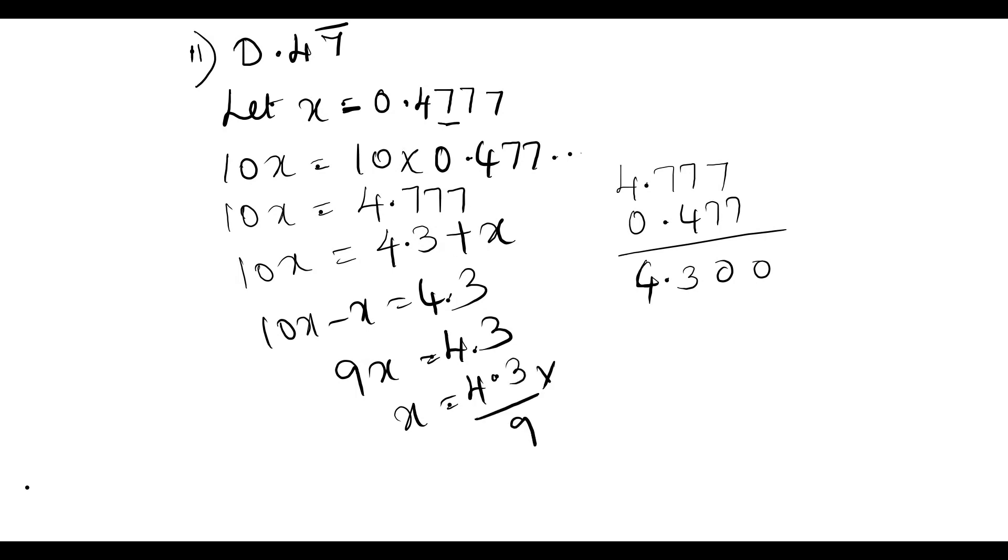To convert this decimal value in the numerator into a whole number, multiply and divide by 10. If you multiply and divide by the same number, the fraction will not get changed. So it will be 43 by 90.